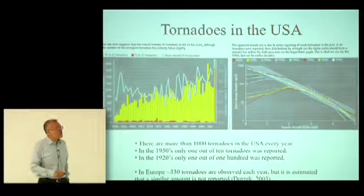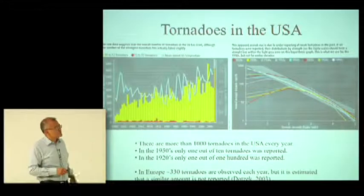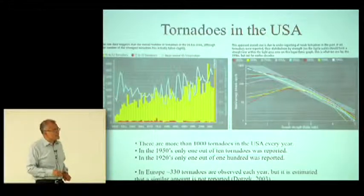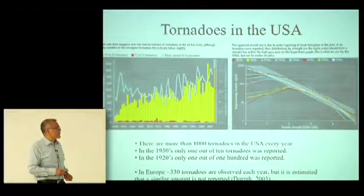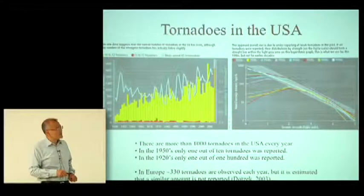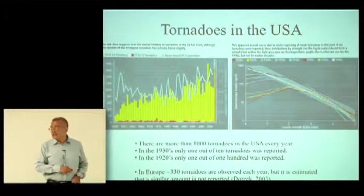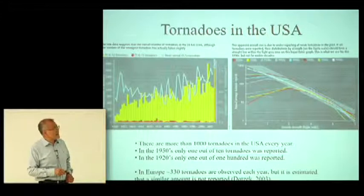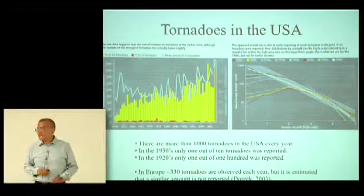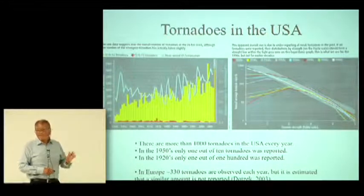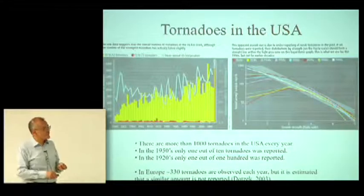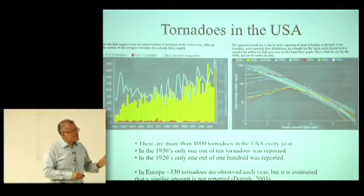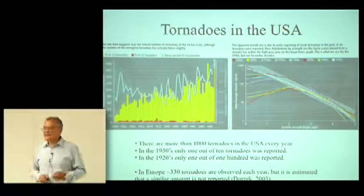So I think we have a severe problem with measurements and bookkeeping. This graph goes from the 1950s to 2005 and shows the annual number of tornadoes — weaker tornadoes in yellow, the strongest in red — and this other line is the average temperature in the United States. What is remarkable is that you might think tornadoes are increasing in time, but this is really a problem of reporting tornadoes.